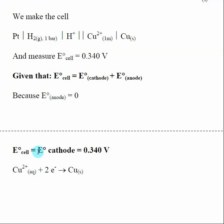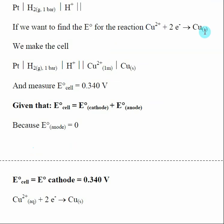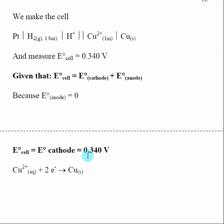The E°(cell) we measured equals E°(cathode) for the reaction we're interested in, which is 0.340 volts. Now we know the half-cell potential for this reaction. We use the SHE originally, but now that we have the half-cell potential for copper, we can use that to find other half-cell potentials. Just remember that all cell potentials are based on the idea that the standard hydrogen electrode is set to zero volts.